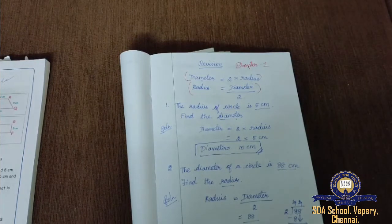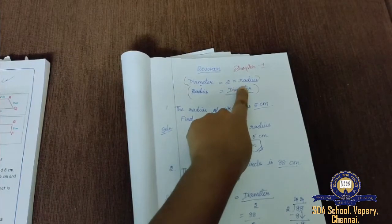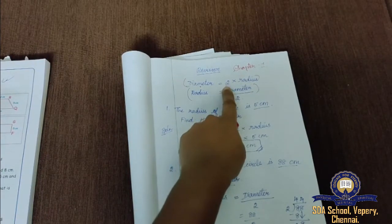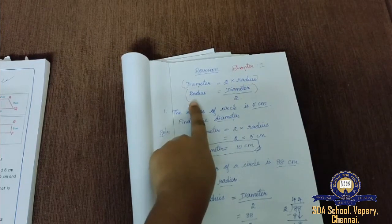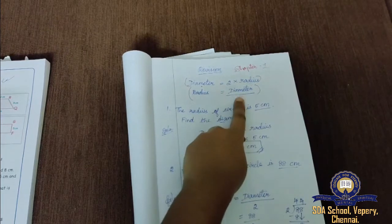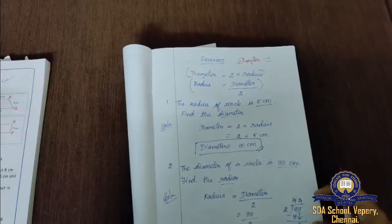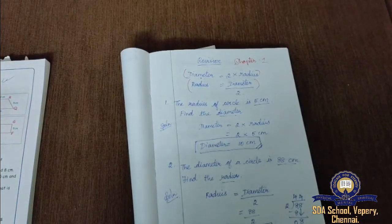To summarize: if we want to find the diameter, we multiply radius by 2; if we want to find the radius, we divide the diameter by 2. We discussed these in the zoom class, and now I am revising.